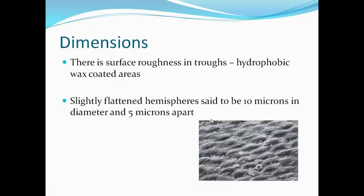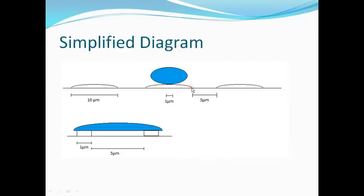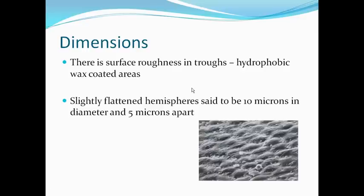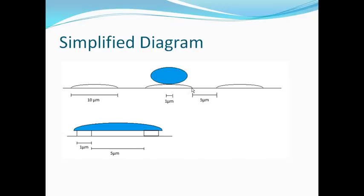We need to talk about dimensions again. The gaps between the bumps, examined through a microscope, are stated to be slightly flattened hemispheres — 10 microns in diameter and 5 microns apart. Because the flattened hemispheres are more bump-like, they are only in contact with 1 micrometer of the flattened hemisphere surface, with the next bump 5 microns apart.